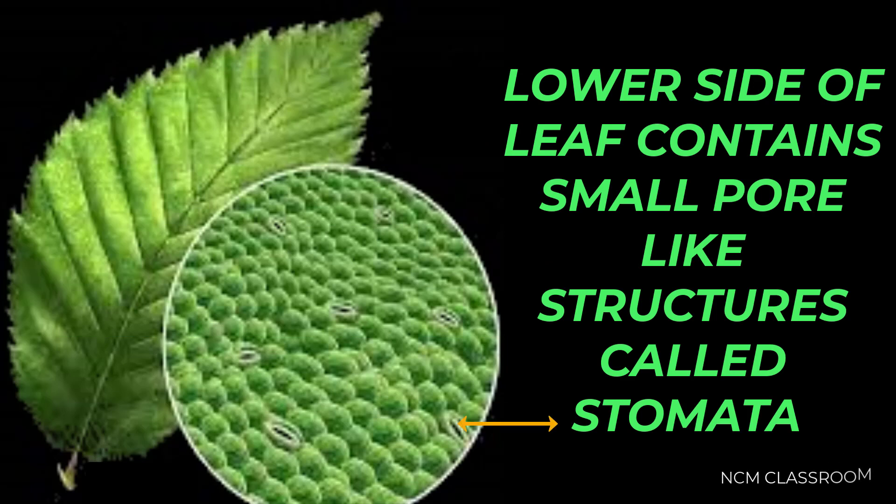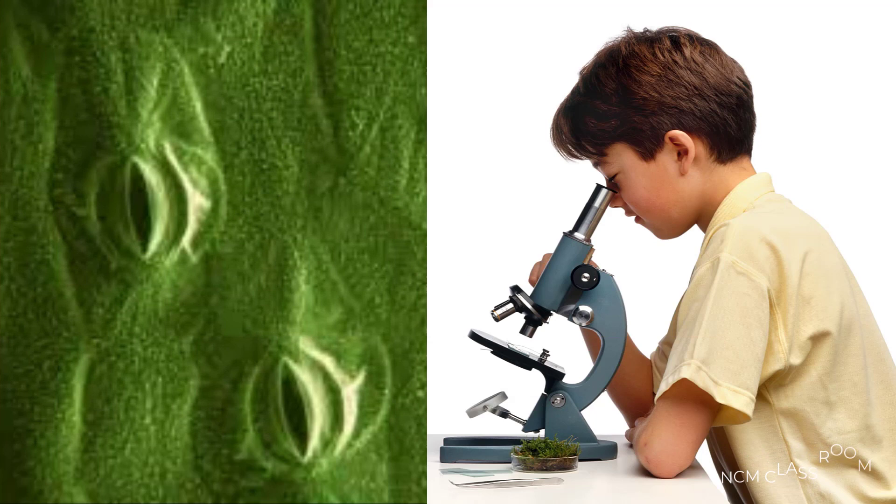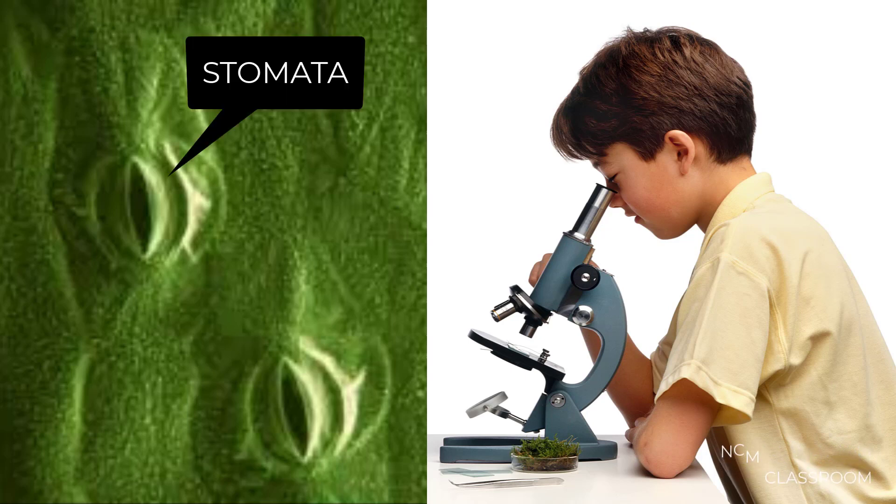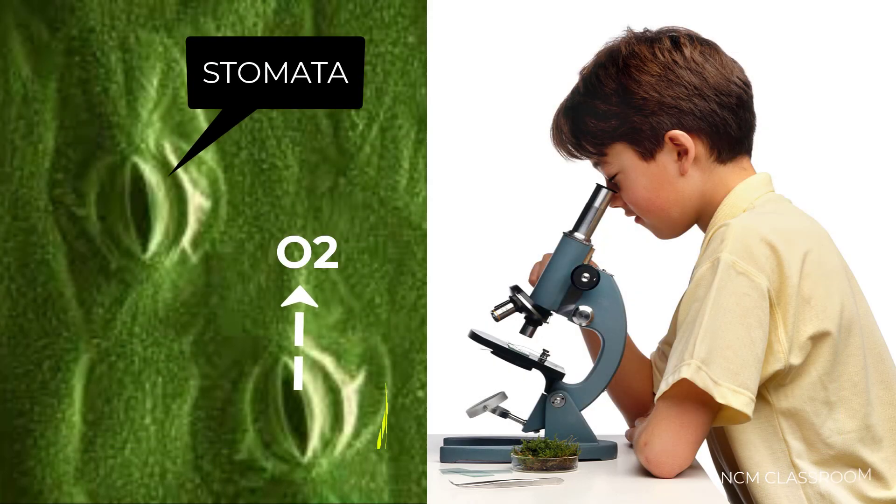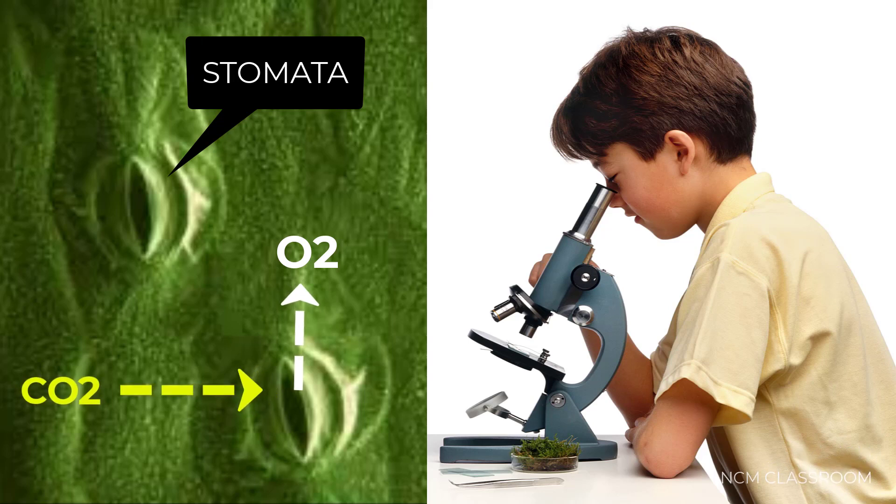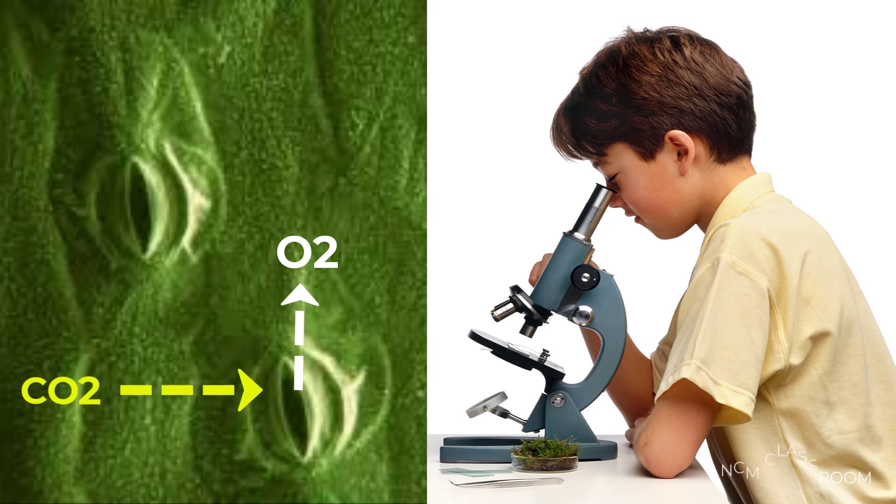Lower side of leaf contains small pore-like structures called stomata. These stomata can be easily seen under the compound microscope. These are bean-shaped pores that you can see in the leaves. They act as nose - the stomata absorb carbon dioxide and release oxygen. This is called exchange of gases.